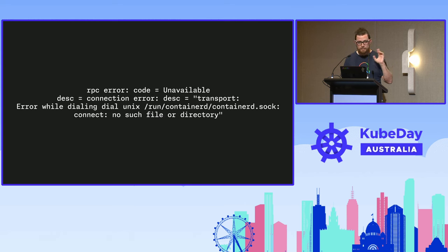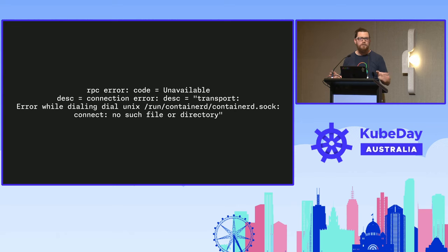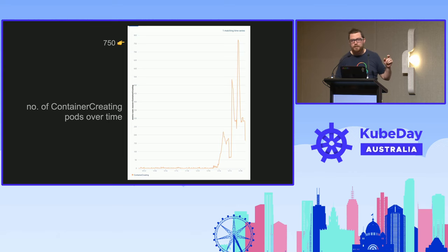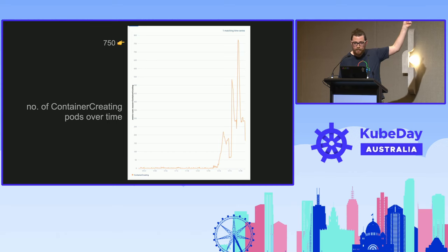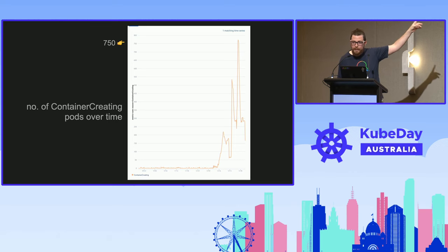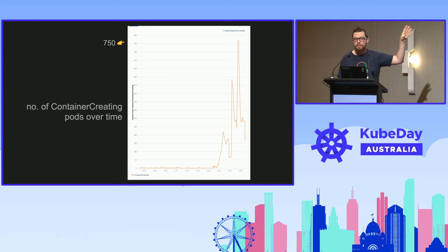I'd never seen this before — it's baffling. What this is basically saying is that Kubelet, which is the distributed worker that runs on each node, can't talk to containerD, which is the container manager service, on the same node. That shouldn't be possible. We do some more digging, and we realize these nodes are horribly overloaded. This graph is showing the number of waiting containers across the namespace, and that peak up at the top there is 750. That horizontal line at the bottom is the normal amount — about five. So this is over 100 times the amount of yet-to-be-scheduled work.